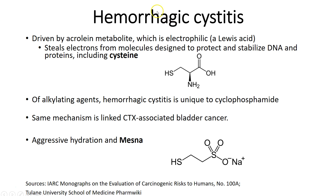Cysteine, as you may remember from biochemistry, is important in protein folding and protein stabilization, particularly with extracellular proteins — it's a big part of stabilizing protein structure. This same mechanism of the acrolein metabolite being highly reactive and cytotoxic is what causes cyclophosphamide-associated bladder cancers. So we're looking out not just for hemorrhagic cystitis but also secondary bladder cancer associated with cyclophosphamide therapy.